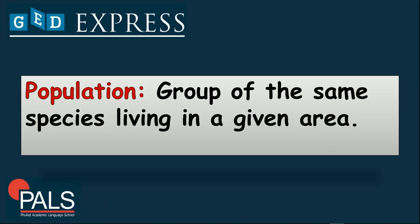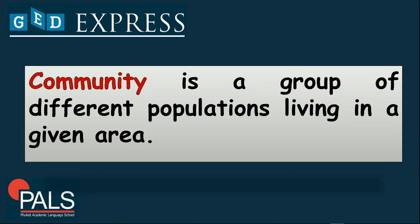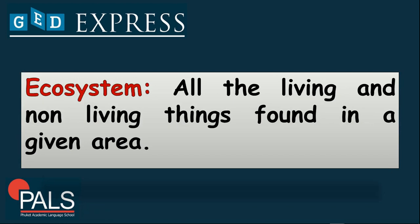A cluster of organisms living in a specific area is known as a population — they have the same roles and organization within a specific location. A community is defined as a group of different populations living in an area. A combination of different communities will give you an ecosystem, which also considers the non-living things existing within that area.